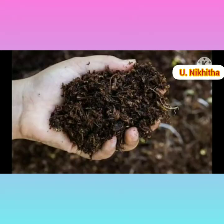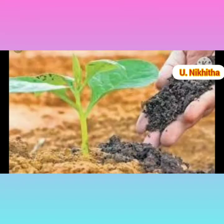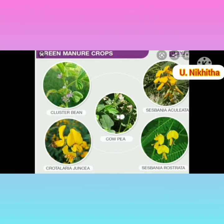Organic manure is a well-decomposed material used in organic agriculture, free of harmful chemicals and weed seeds. It is either of animal or plant origin.